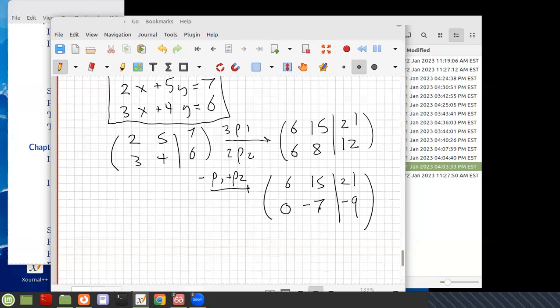And then it's in echelon form. So you can see what's happened is that I've gotten where I haven't had to do row operations with fractions. And doing row operations with fractions leads to more errors than one would like.